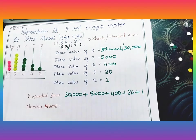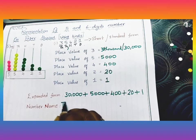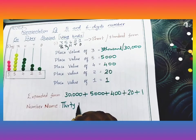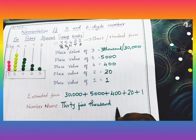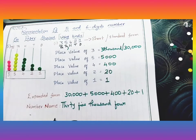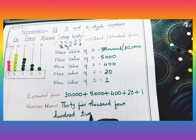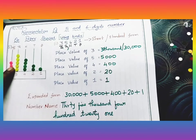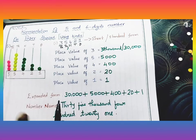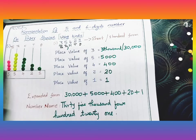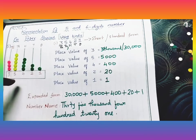Write the number name: thirty-five thousand, four hundred, twenty-one. Use your pencil to write all this — don't use sketch or pen, just use your pencil. Using bindi we have created the abacus on our paper — this is your paper abacus activity.